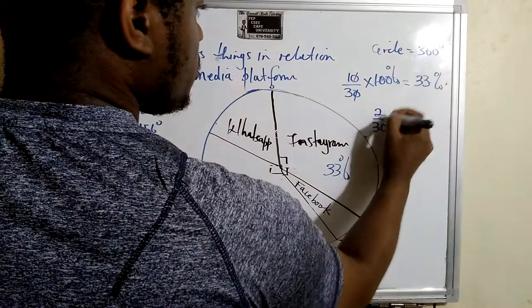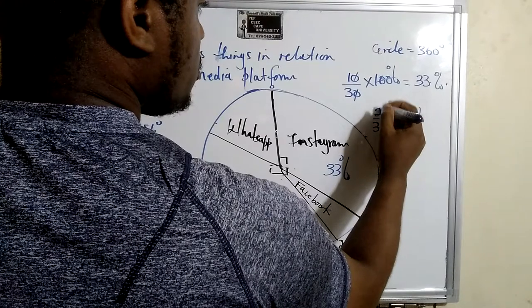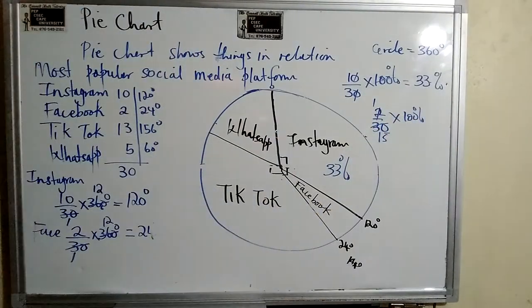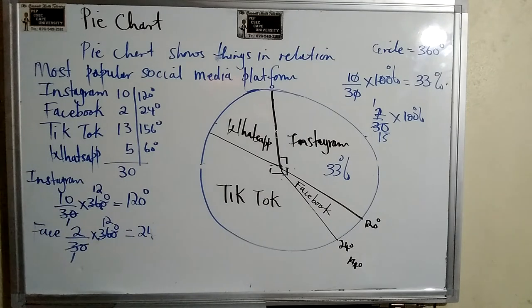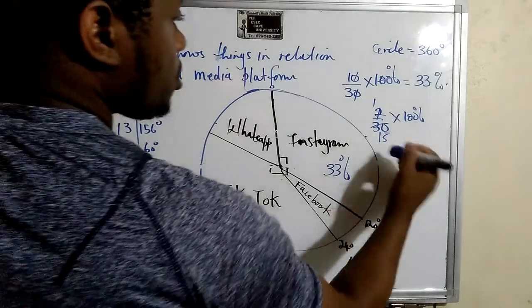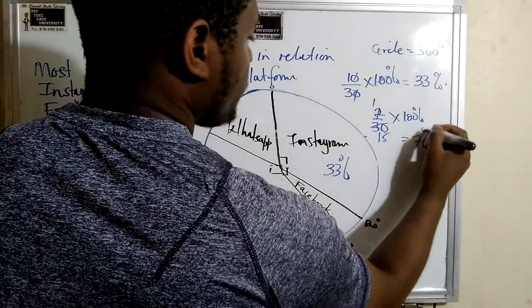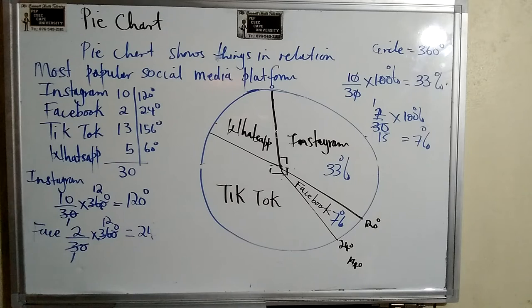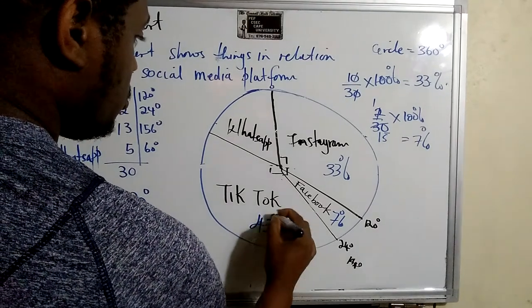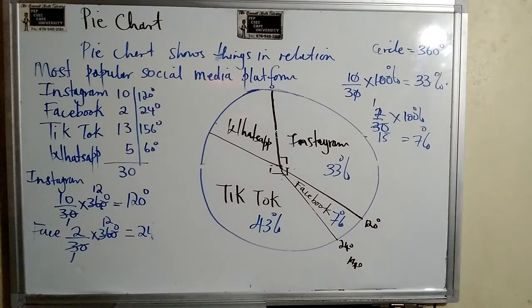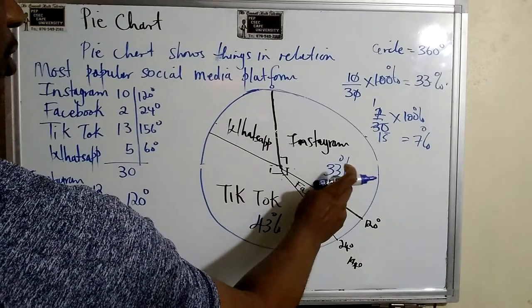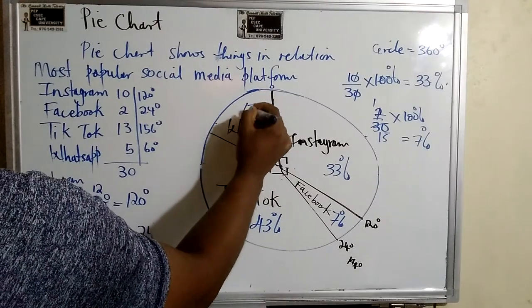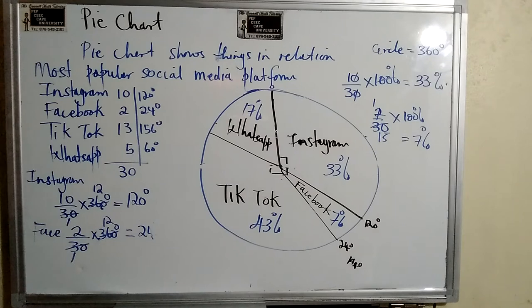Alright, this one now, 2 out of 30 times 100 percent. Since it is 15, 100 divided by 15 gives us 6.6. So we're just gonna call this 7, 7 percent. So TikTok now would be 13 divided by 30 times 100. So this is 43 percent. And we can calculate the next one now. So 43 plus 33 plus this is 83. So this will be 70 percent. So that's all we have calculated, guys.